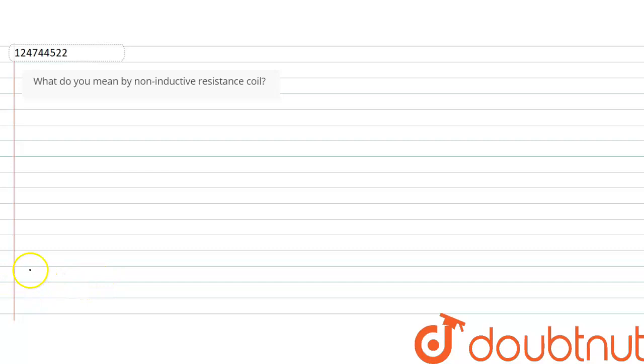Hello, I'm going to use the DoubtNAT app. I have a question I have to ask: What do you mean by non-inductive resistance? I have to ask about non-inductive resistance — what do you mean by non-inductive resistance?